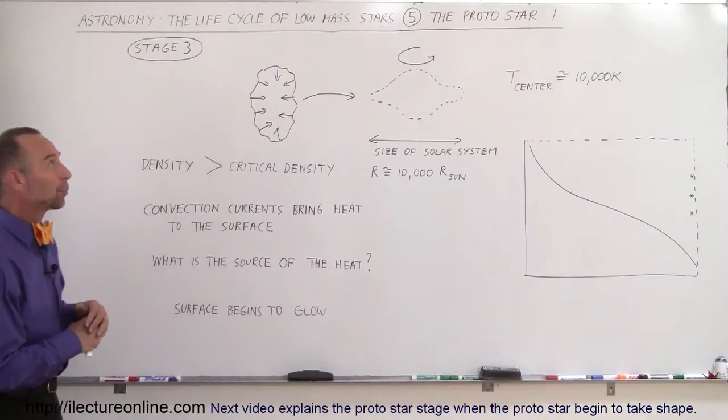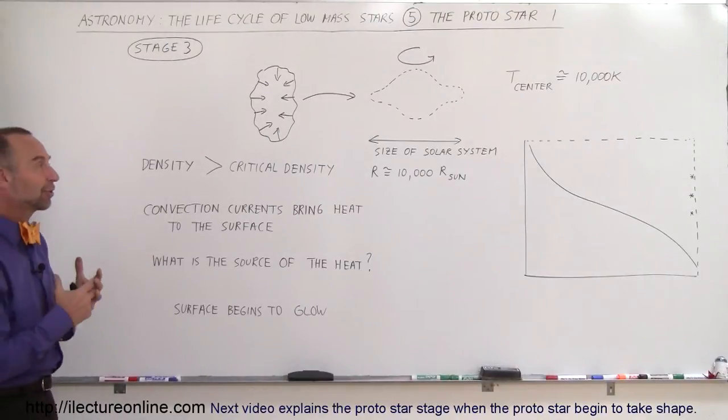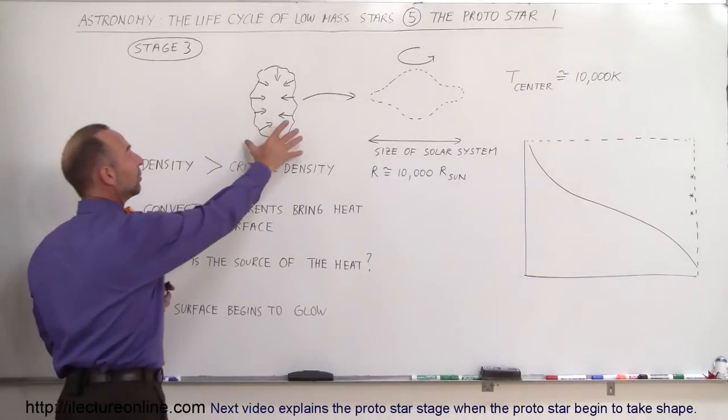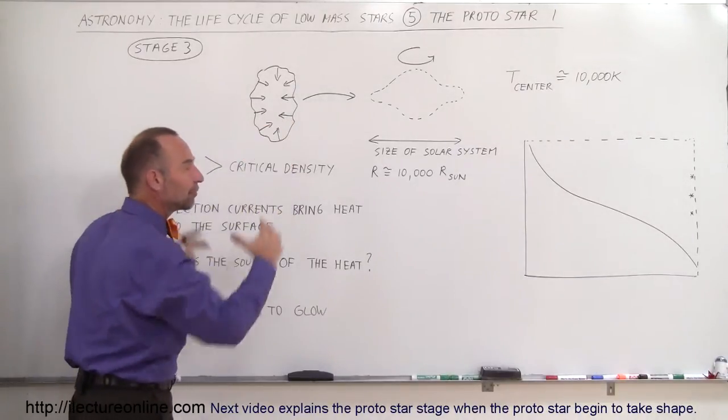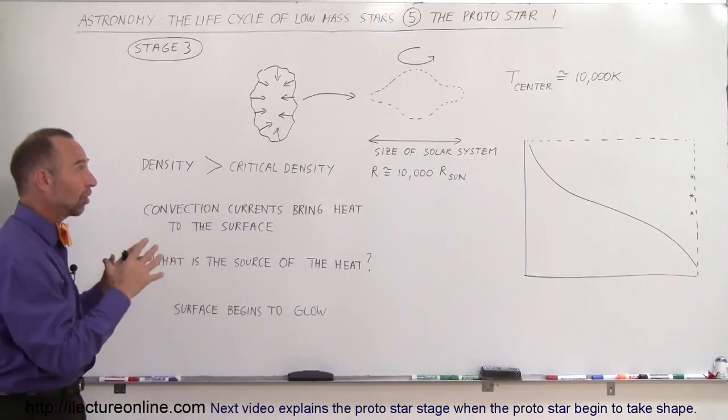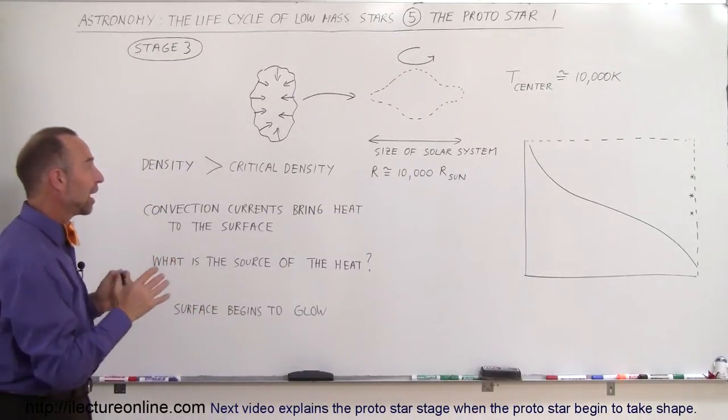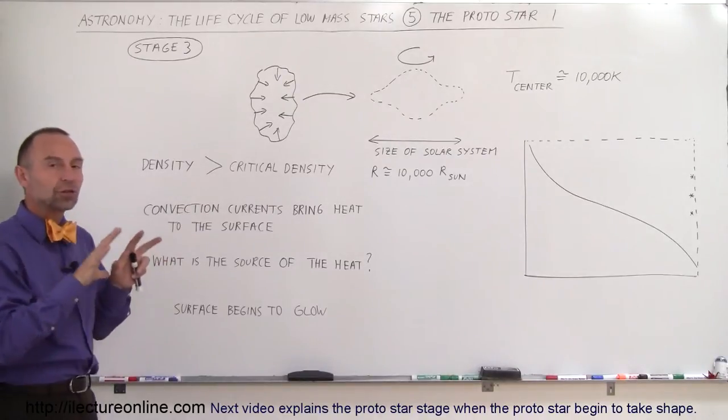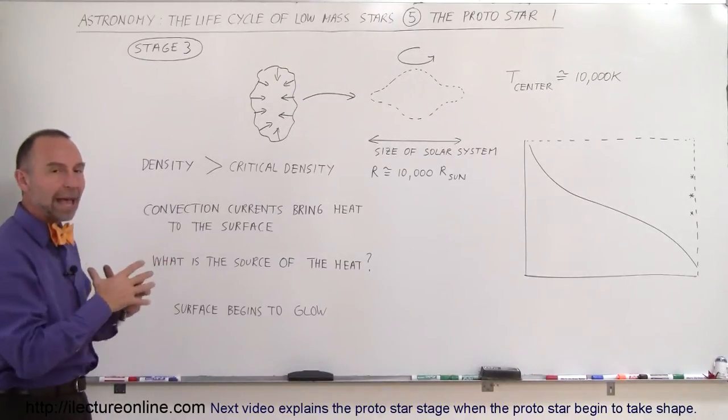Welcome to ElectronLine and now we're on stage 3 of the formation of stars. The fragment of the big cloud of dust and gas that will become the star has now reached a density greater than a critical density. Pressure can no longer stop the collapse. The collapse is going to happen.